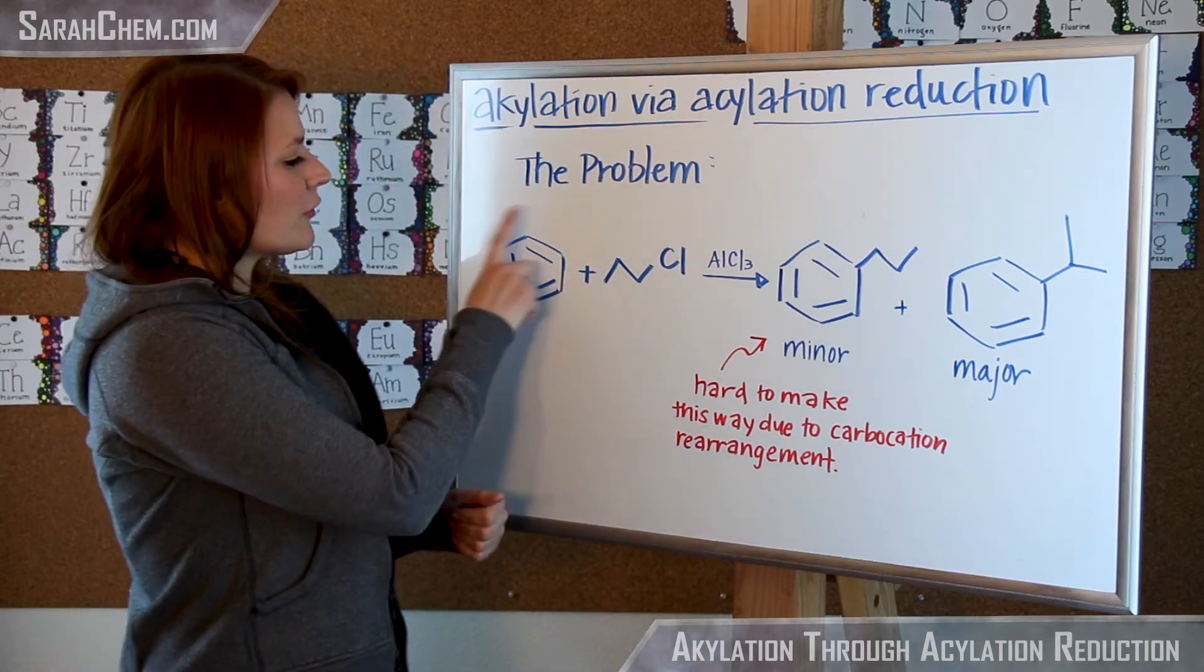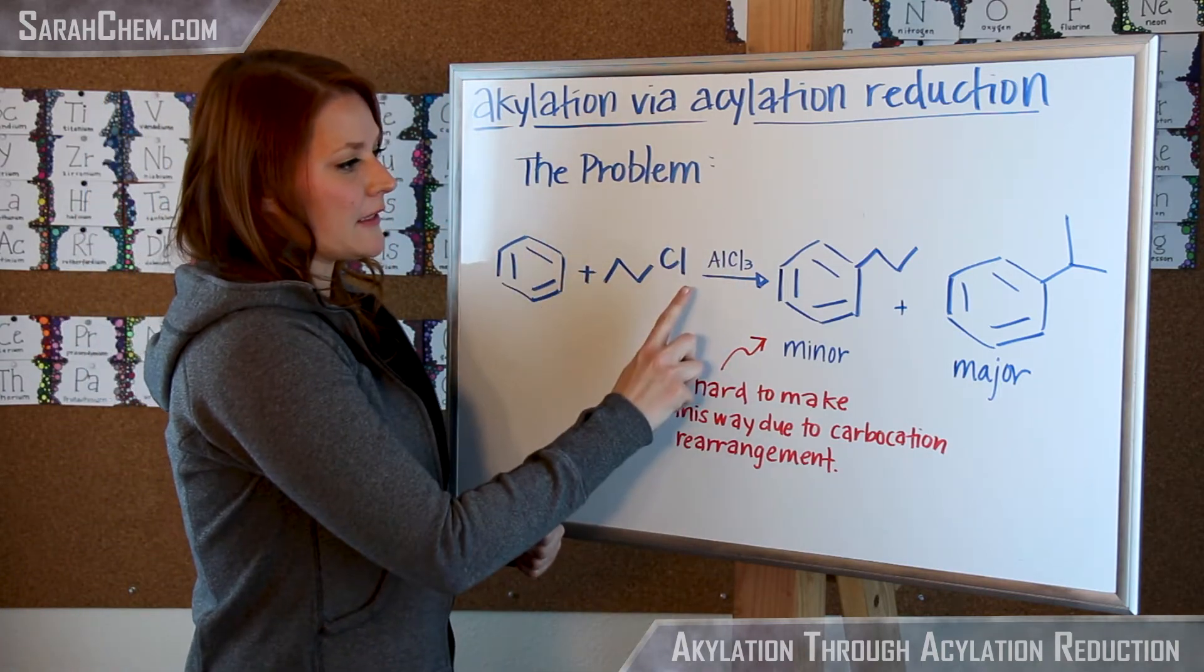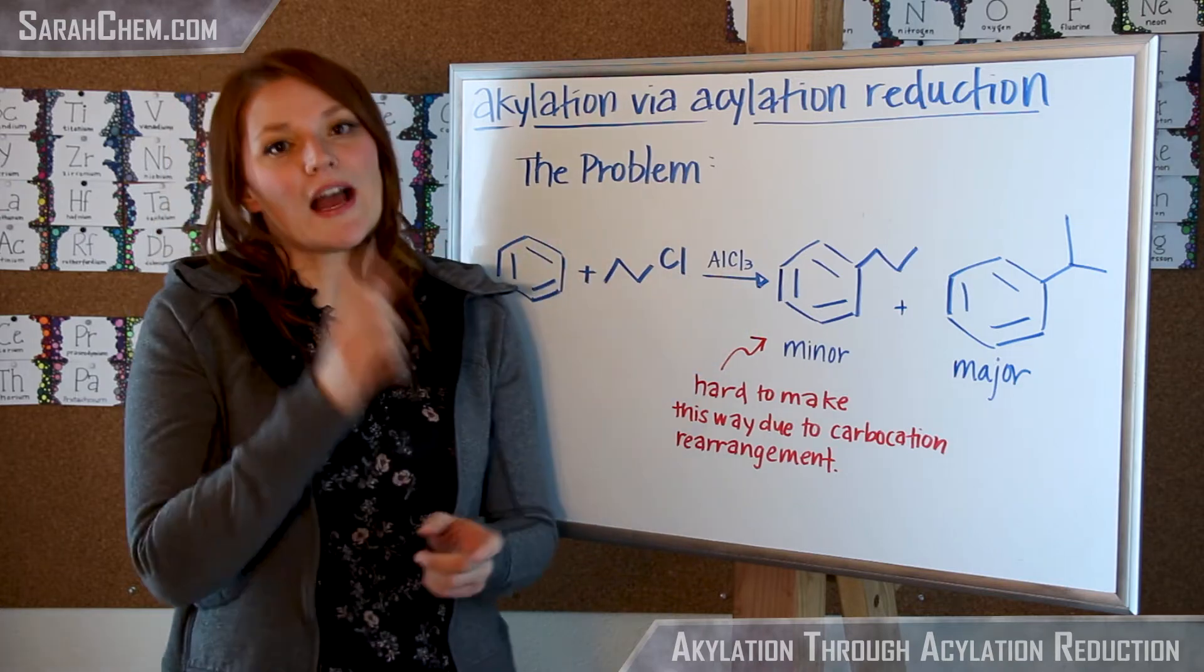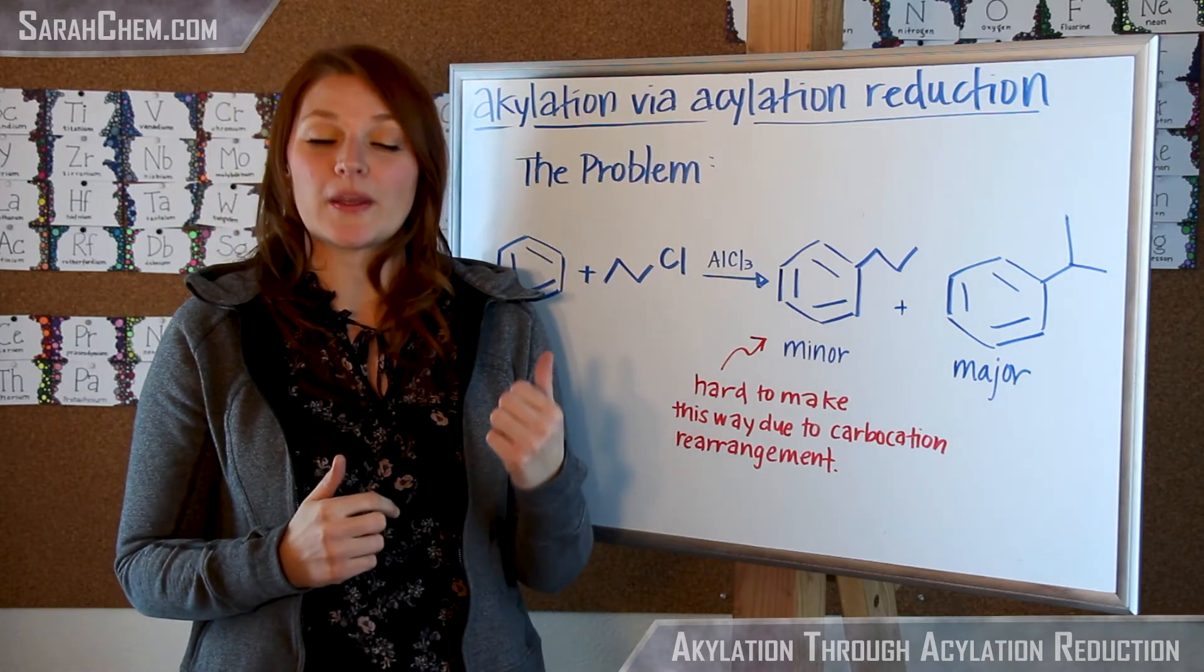For example, here we have a benzene and here we have our alkyl chloride with our Lewis acid. Now the Lewis acid will react with that alkyl chloride in order to make the electrophile that we need.